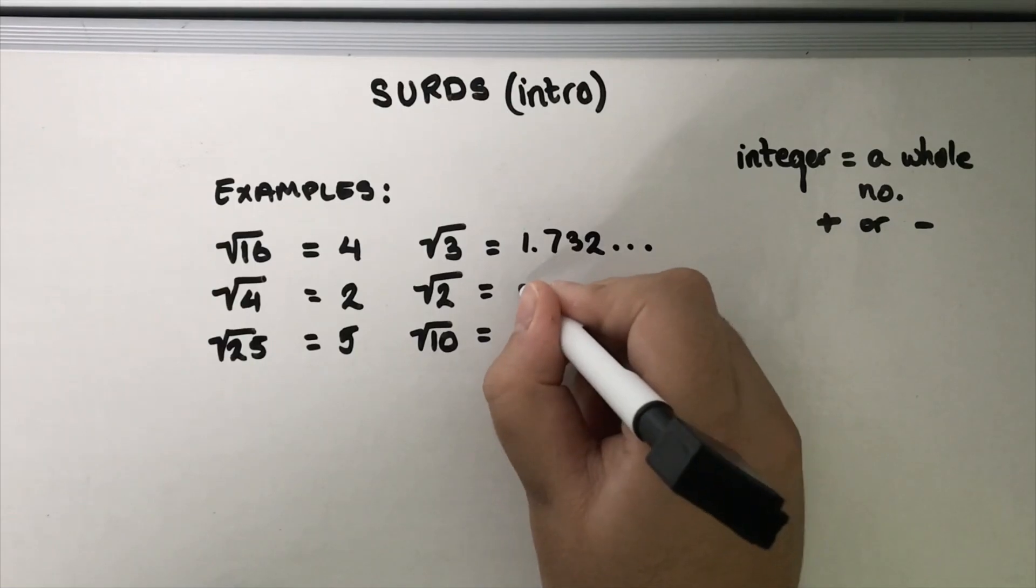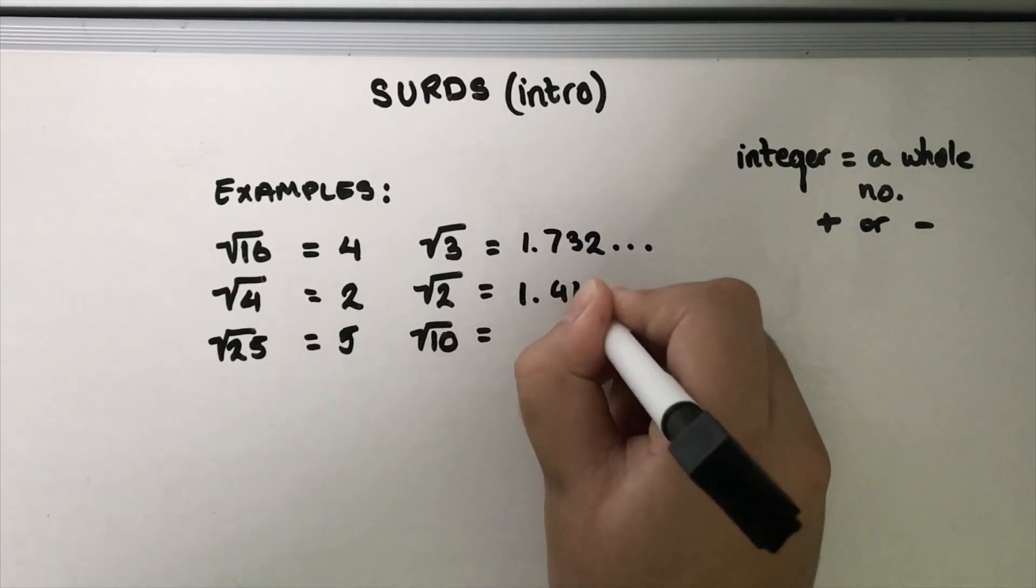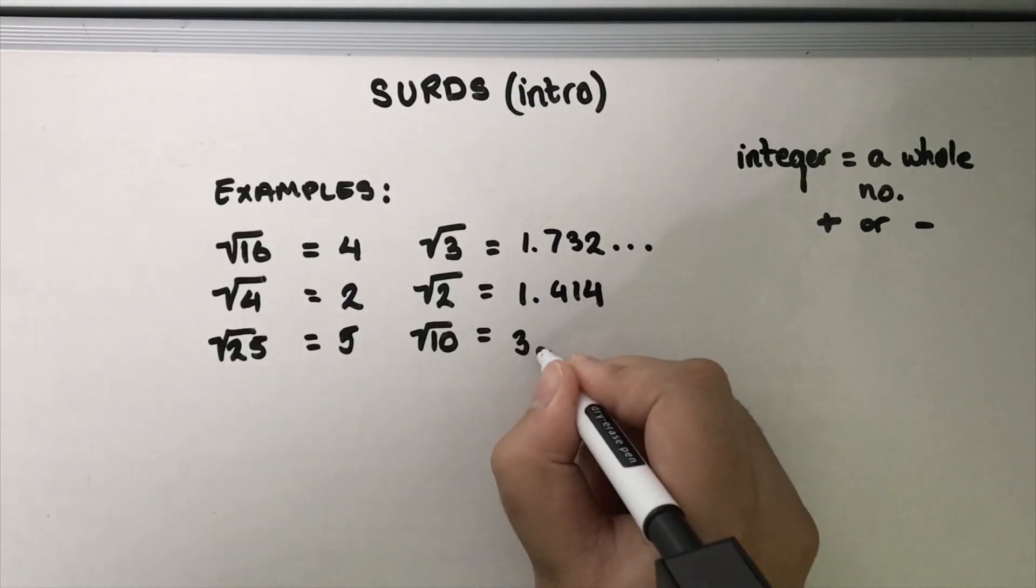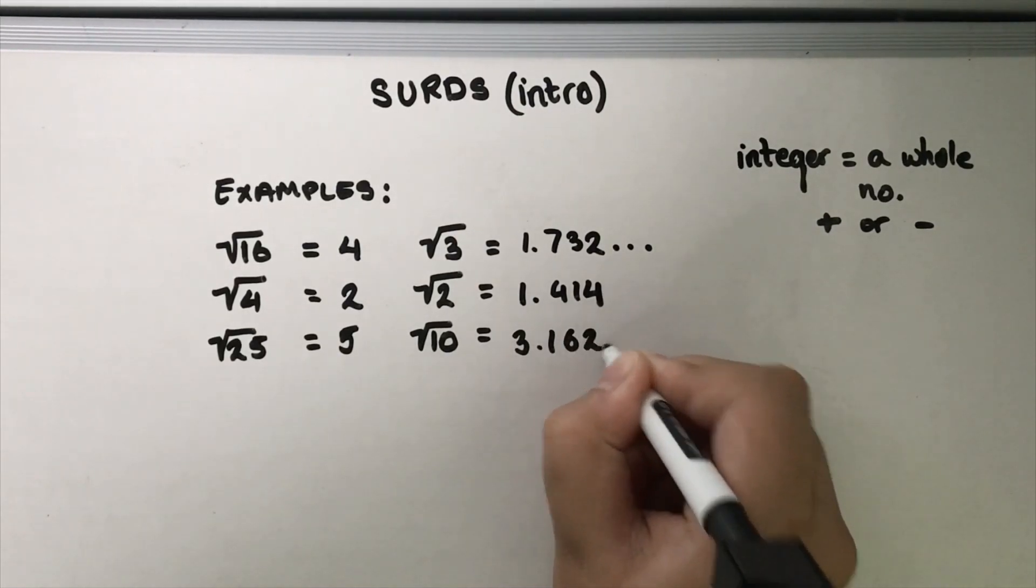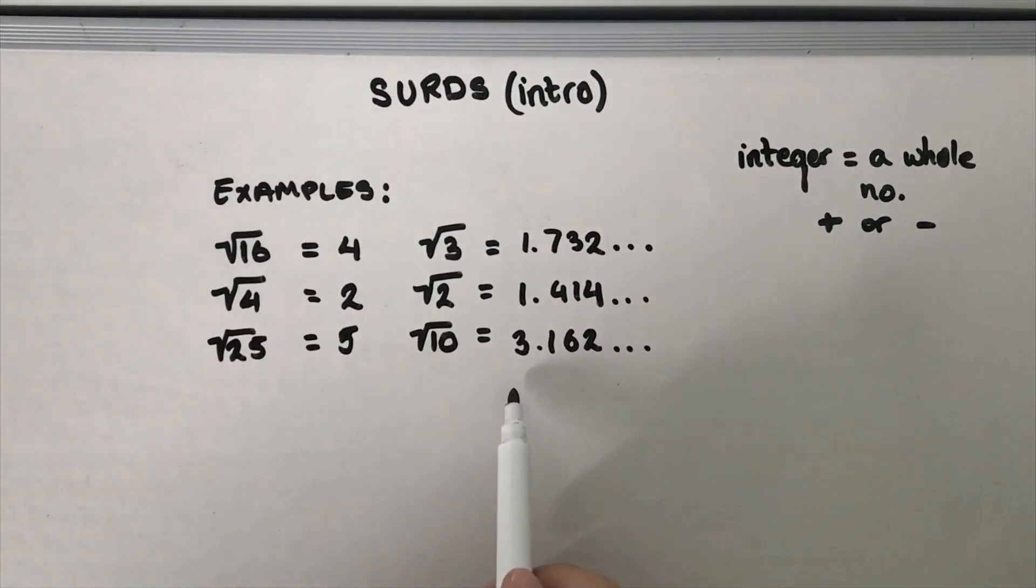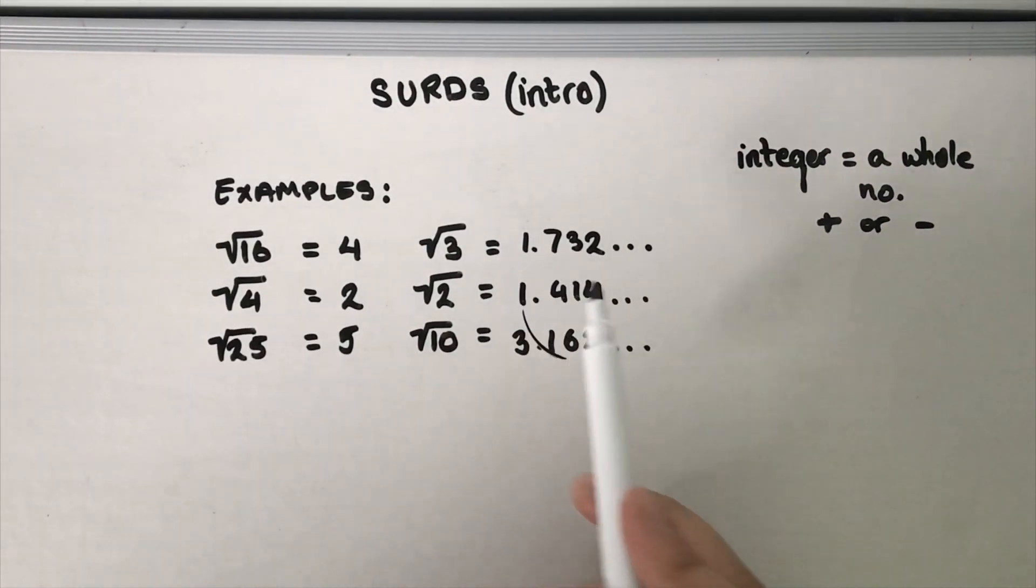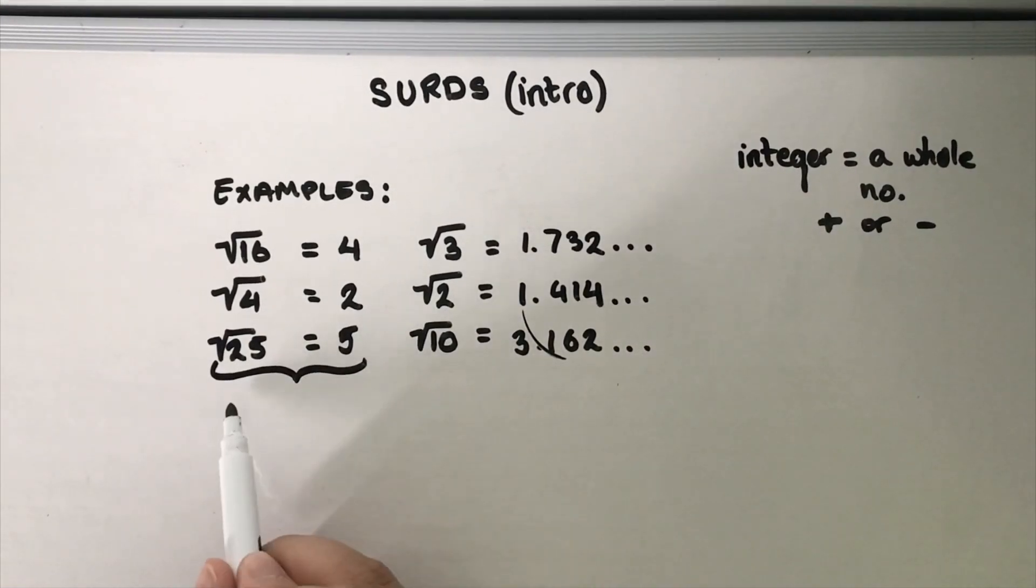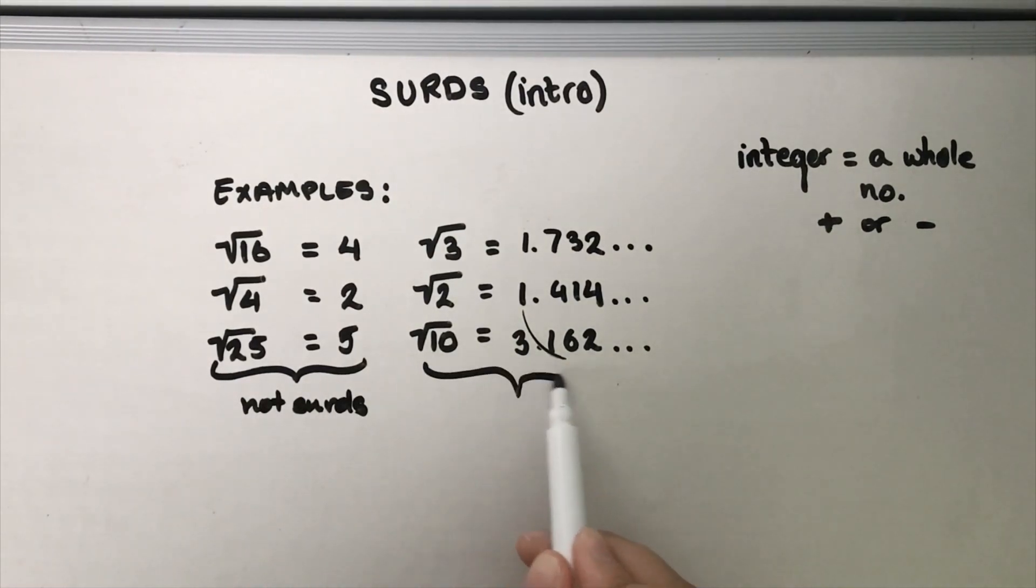For root 2 you get 1.414. For root 10 you get 3.162 and so on. These are surds because these numbers here are not an integer. So we can label these as not surds and we label these as surds.